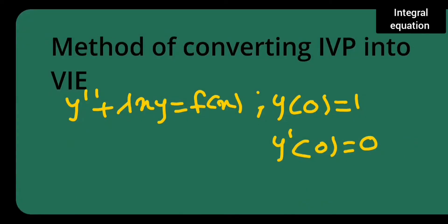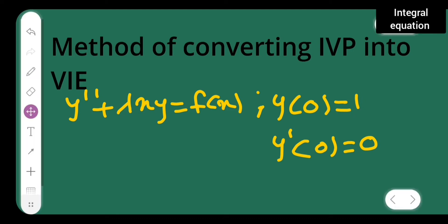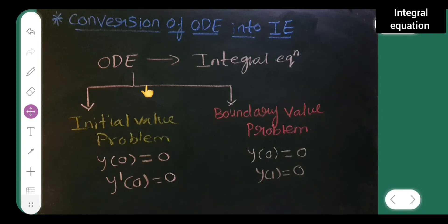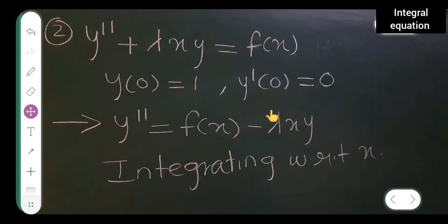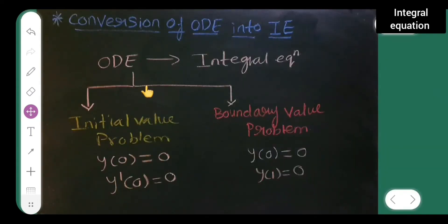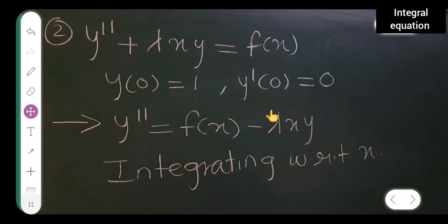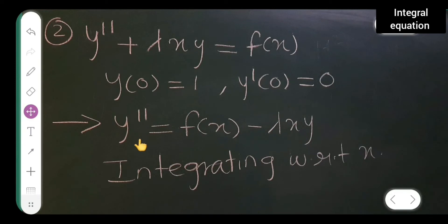In today's lecture I will be doing the method of converting an initial value problem into a Volterra integral equation. The problem is y double dash plus lambda x y is equal to f of x, where the conditions are given as y of 0 is equal to 1 and y dash of 0 is equal to 0.